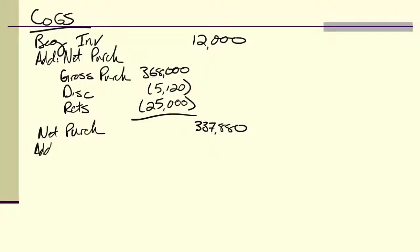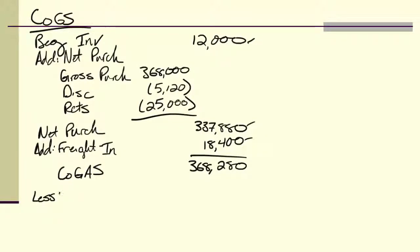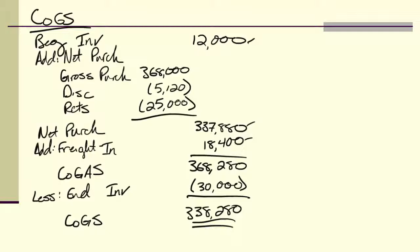Add in my freight in, $18,400. Now I take this number, this number, this number, I add them all up. That gives me my cost of goods available for sale, $368,280. And finally I subtract my ending inventory. And that's going to give me cost of goods sold. And there's my double underline to signify that I'm done with my calculation and done with my table.